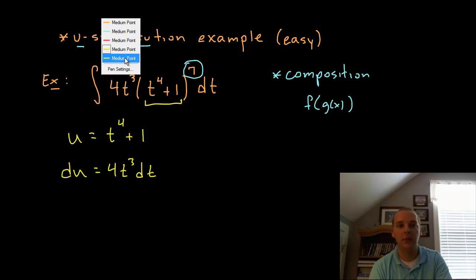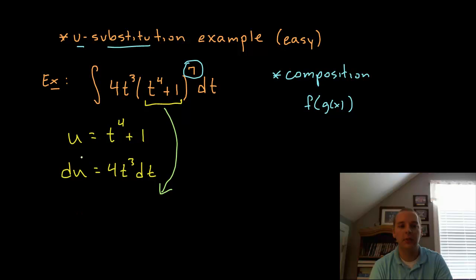Alright, so now it is time to swap everything out and actually do the substitution. So this right here would be the same as the integral of this part right here being u, right here underlined. That would make u to the 7th. U to the 7th, that just looks better.